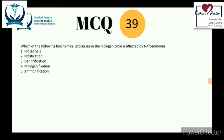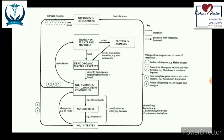Question 39: which biochemical process in the nitrogen cycle is affected by Nitrosomonas? Nitrogen in the atmosphere can be converted to ammonia or nitrogen-containing compounds like nitrite or nitrate through nitrogen fixation. This can occur naturally or artificially — one example of artificial fixation is the industrial Haber process, where nitrogen and hydrogen are combined to form ammonia.